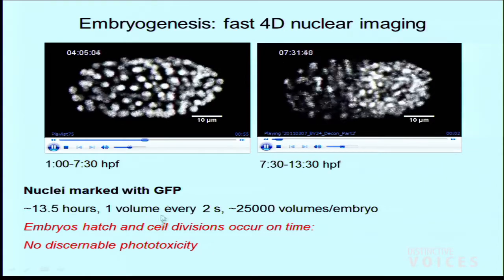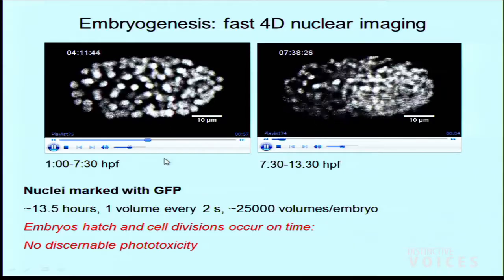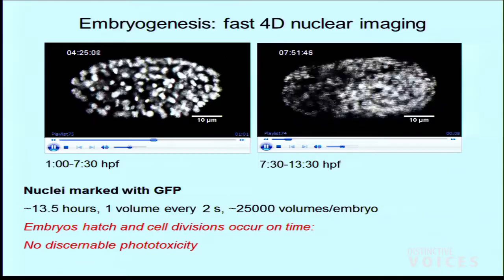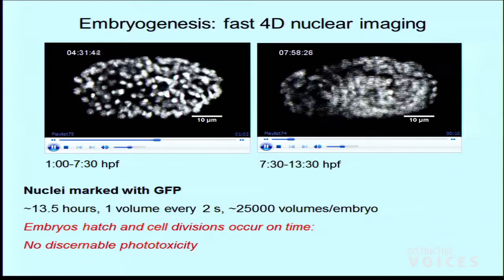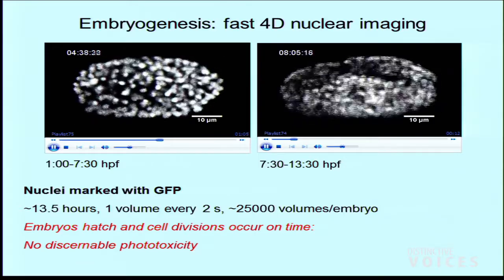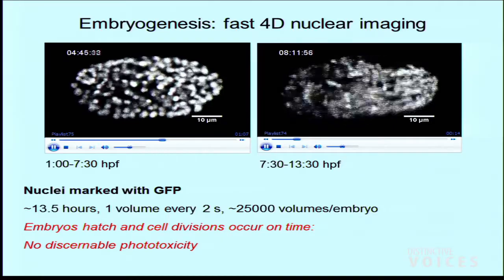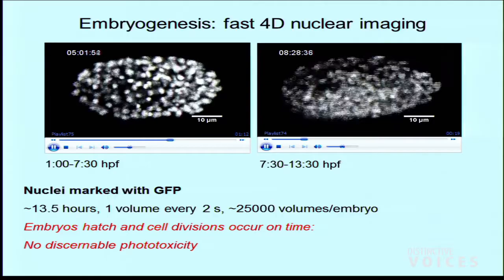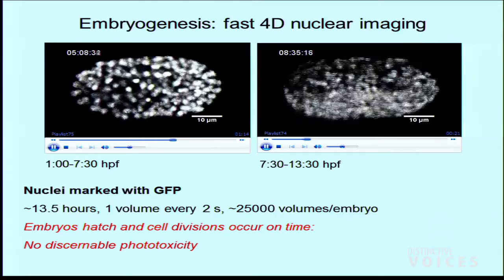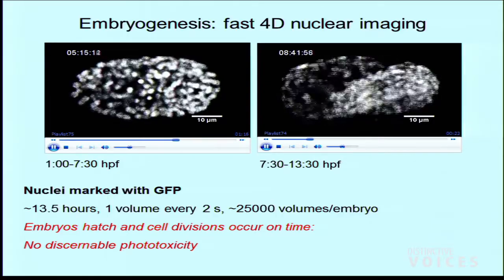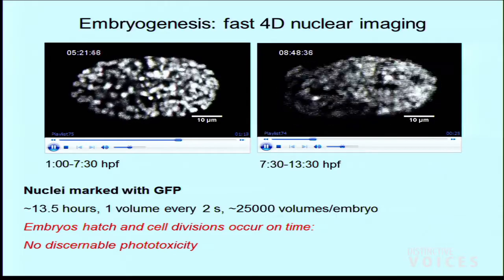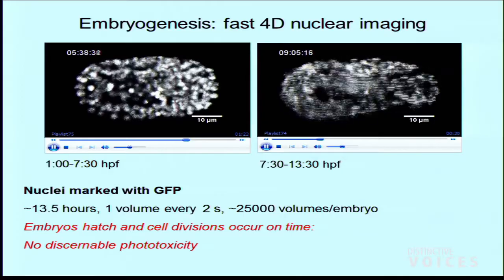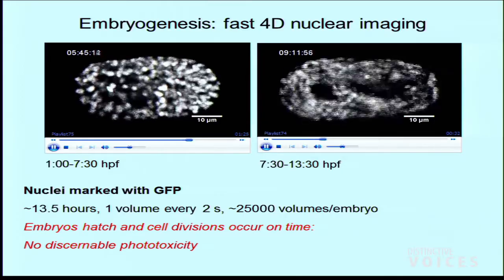Just some numbers: every frame in this movie is a projection of a volume, and there are 25,000 volumes in this data set — on the order of 100 gigabytes of data. Despite all of this imaging, the embryos always hatch on time, so there's no discernible effect of the light. From that metric, this microscope is an enabling tool. It also happens to be about 30 times faster than another microscope you might use to study the worm — both fast and gentle.